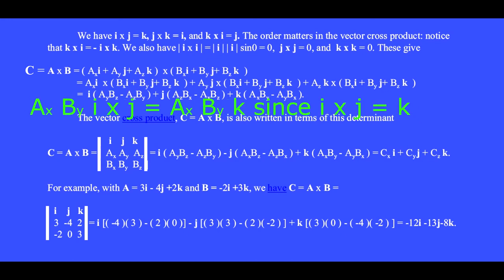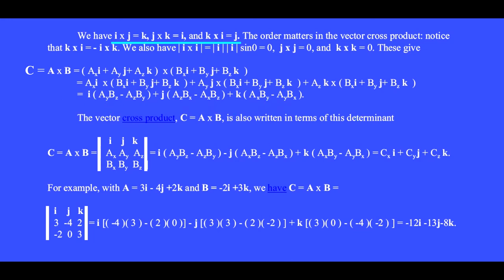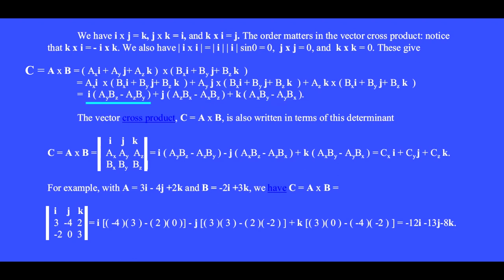Then we have A sub X I hat cross J hat, which gives K hat. Using I cross J equals K, J cross K equals I, and K cross I equals J, and their negatives, we gather terms and get A cross B equals I hat times this mixture, plus J hat times this mixture, plus K hat times this mixture. Notice that the X part of the cross product depends on the Y and Z components of the two vectors. The Y component depends on the X and Z components, and the K hat component depends on the X and Y components.